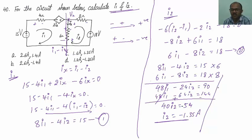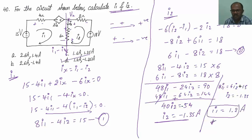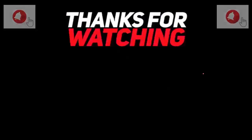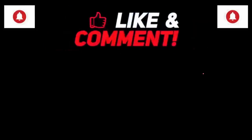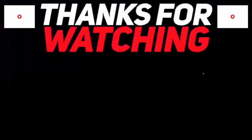What is the value of I1? Using the first equation: 8I1 equals 4I2 plus 15. Substituting I2 equals minus 1.35, I will be getting I1 equals 1.2 amperes — that is option D. Thank you for being on my channel. Please like the video, share it with your friends, and subscribe to my channel GrainingYan. All the best for your competition. Thank you.